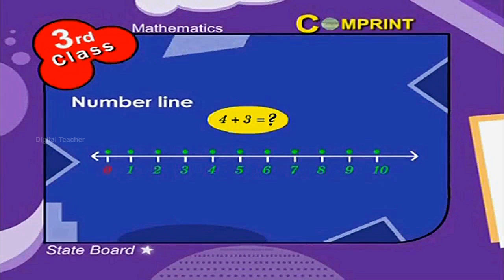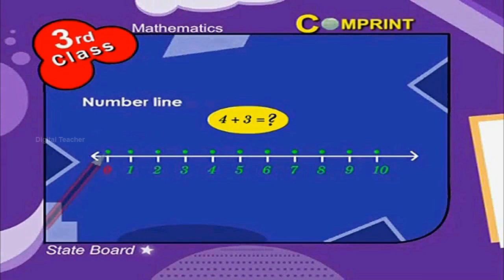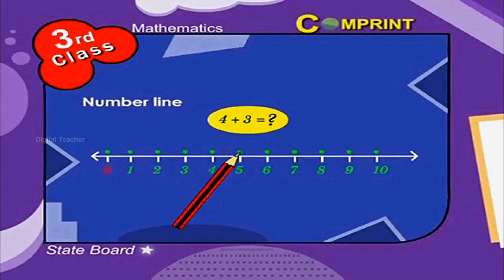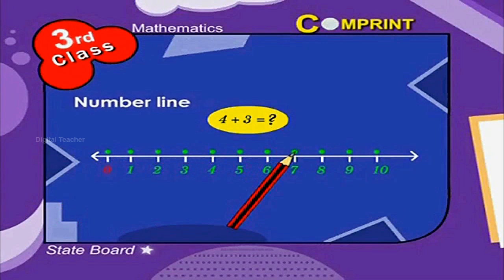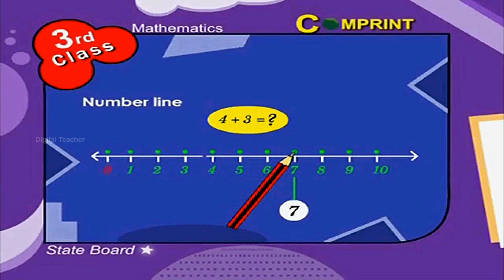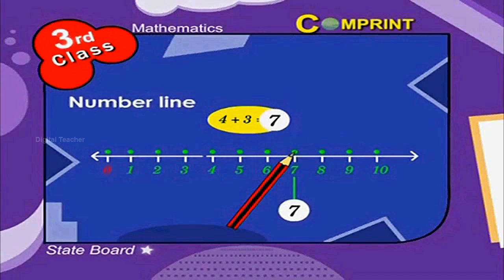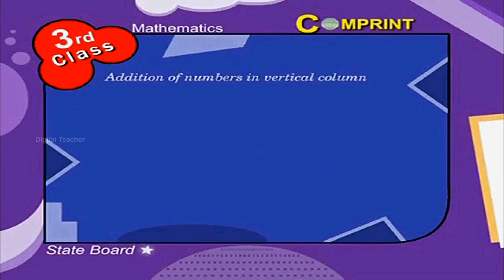If we want to add 4 plus 3, step 1: move 4 steps from 0. Then move 3 more steps. We reach the number 7. The value of 4 plus 3 is equal to 7.